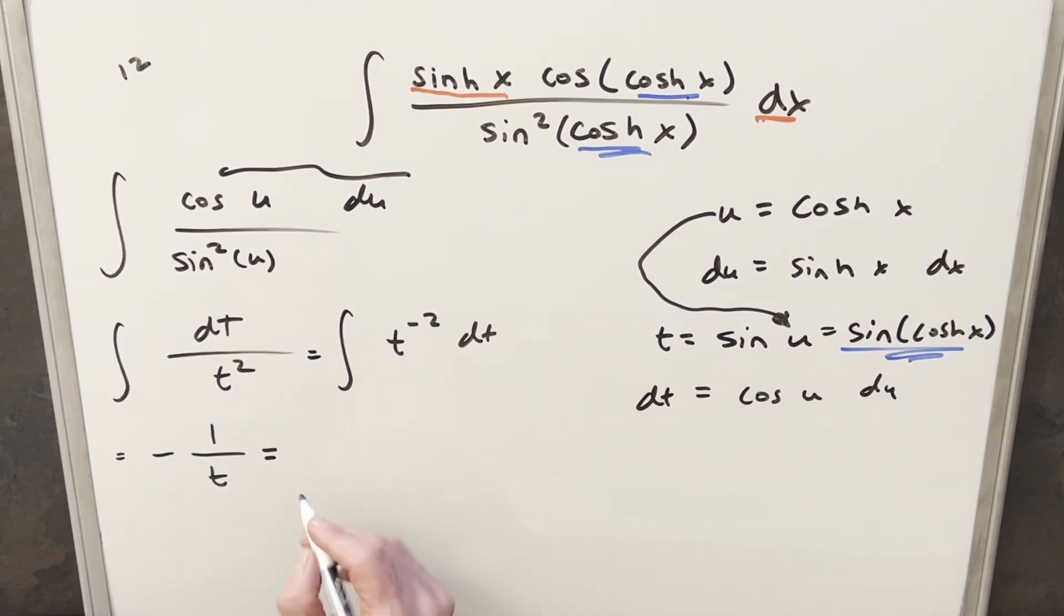So now we'll just back substitute the t to finish it off. So for my final solution, we're just going to have -1/sin(cosh x), plus C, and that's it.